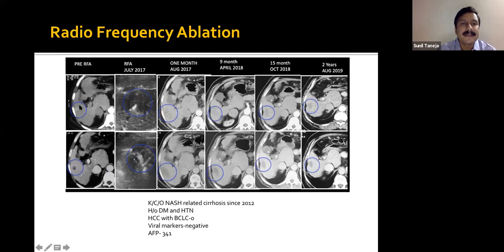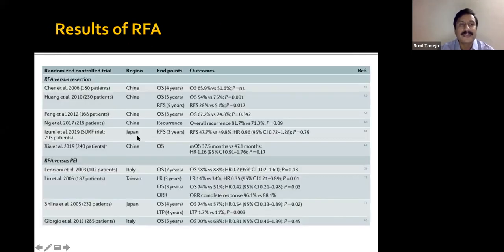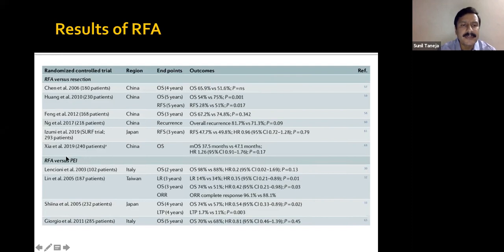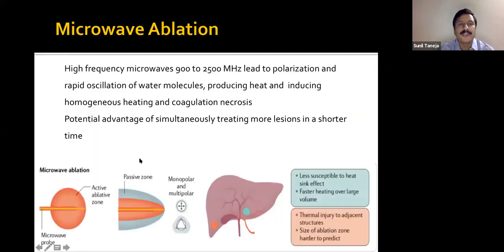A case example shows HCC on arterial phase with washout on venous phase. The patient underwent RFA and subsequent follow-up studies showed no new lesion. Results summary: RFA shows good five-year survival comparable to resection and far superior to percutaneous ethanol injection. Percutaneous ethanol injection is now rarely used and has been largely replaced by RFA.